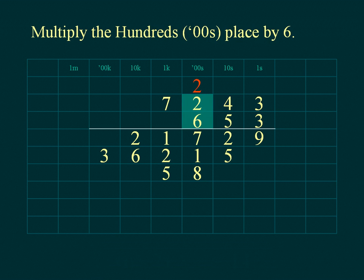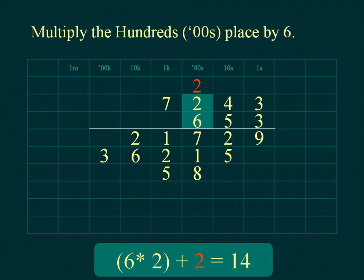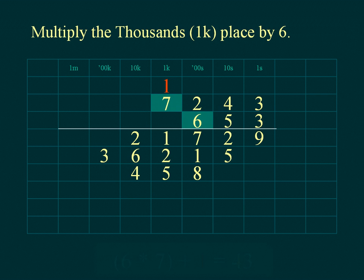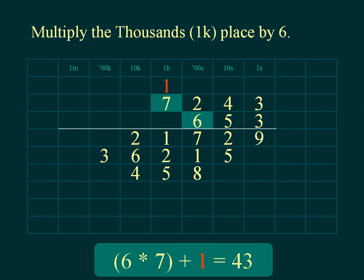Multiply the hundreds of the multiplicand; add the hundreds carried from the tens place. Place the units of the result below the line in the tens place and place the tens of the result under the thousands place. Multiply the thousands of the multiplicand; add the thousands carried from the hundreds place. Place the result below the line in the millions place.